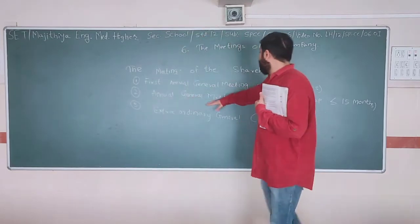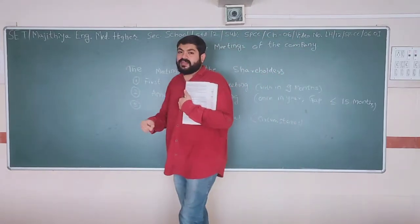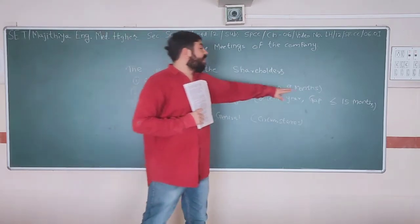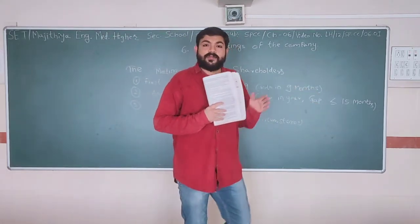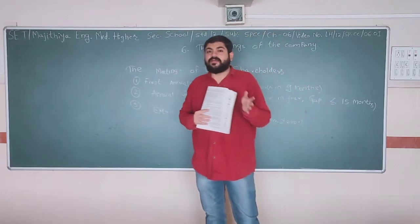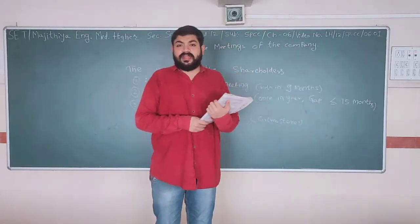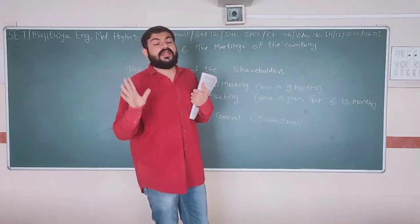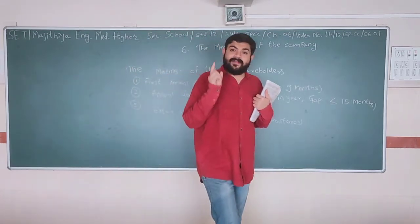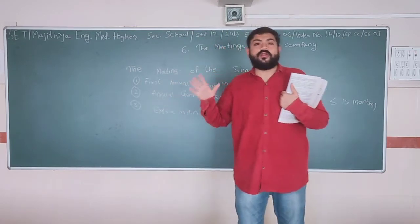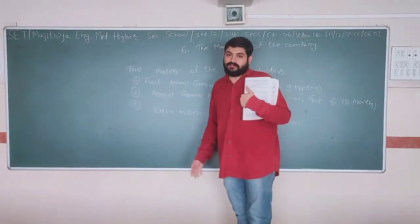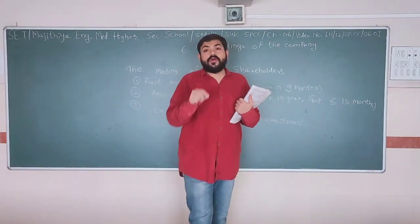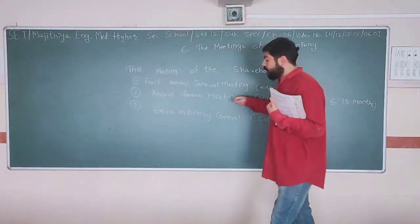Second is the annual general meeting. Every year this meeting has to be held. The gap between two annual general meetings should be less than 15 months. Suppose the first meeting is held in April 2020, the second meeting should be held in April 2021, May, June, before July of 2021. If the gap exceeds this, you have to follow the rules given in the Companies Act and give reasons why the gap is existing.